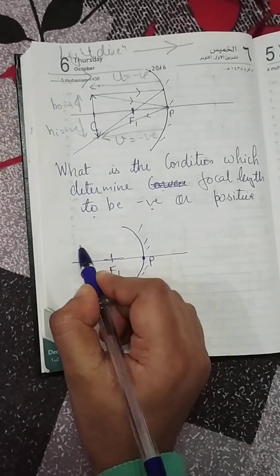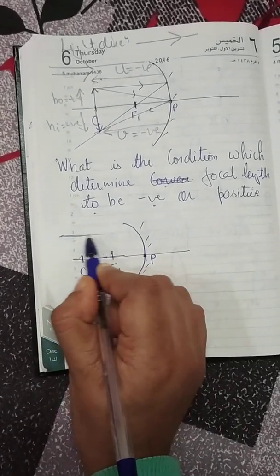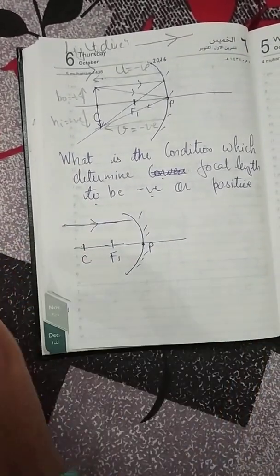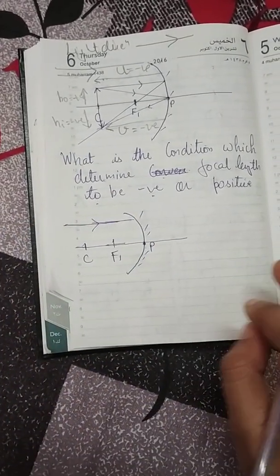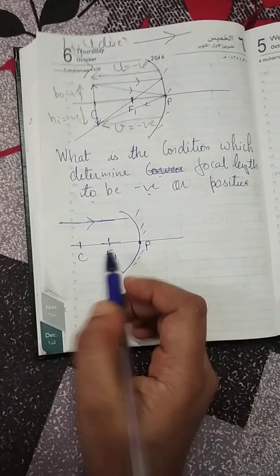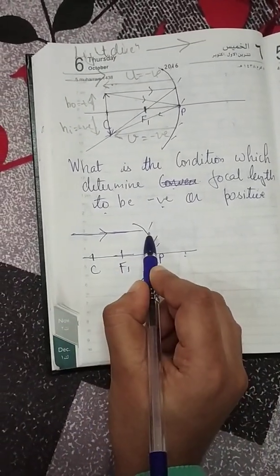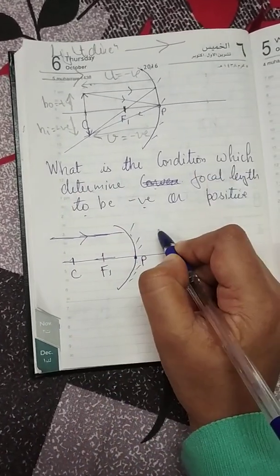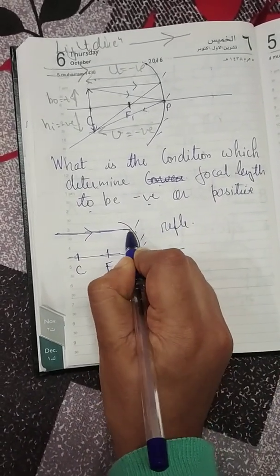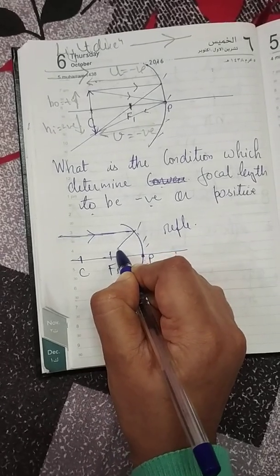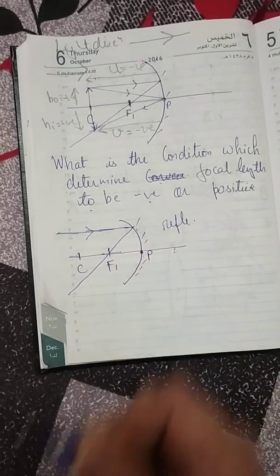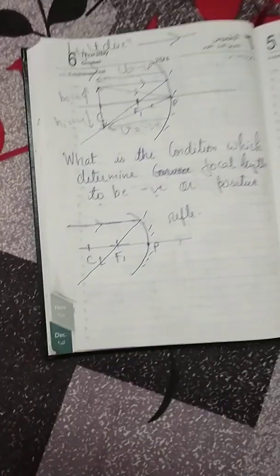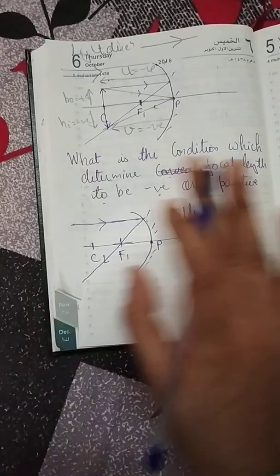The first condition which determines whether focal length will be positive or negative: look, if the incident ray is parallel to the principal axis, after reflection — since this is a mirror there will be reflection — the light will pass through the focus. Light always passes through the focus.